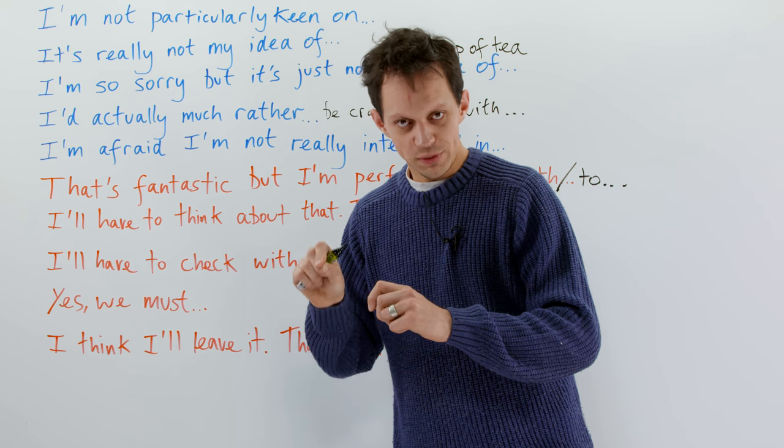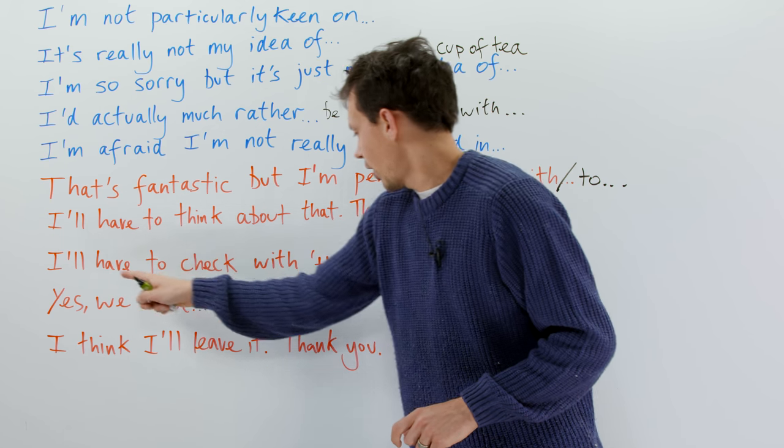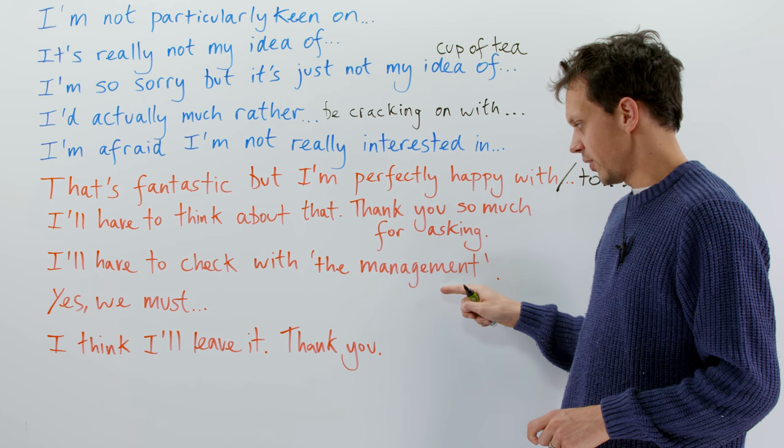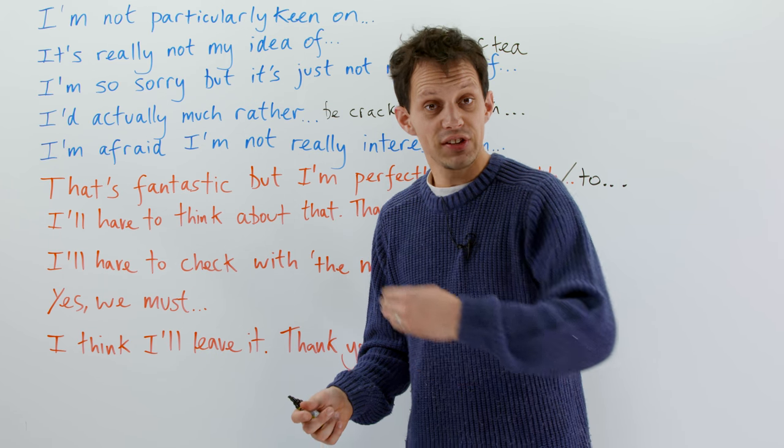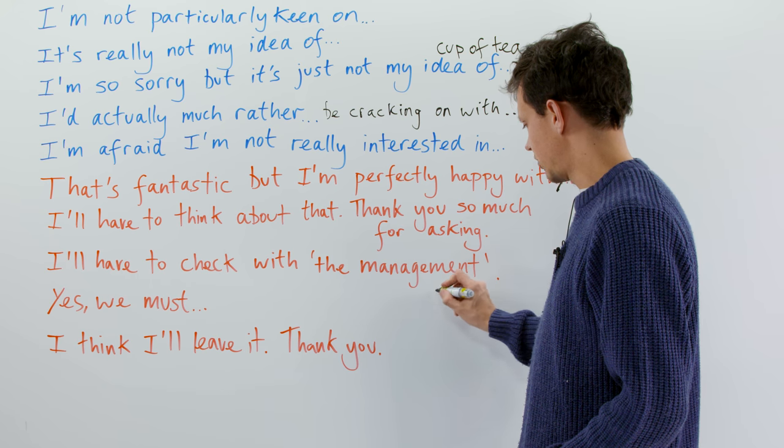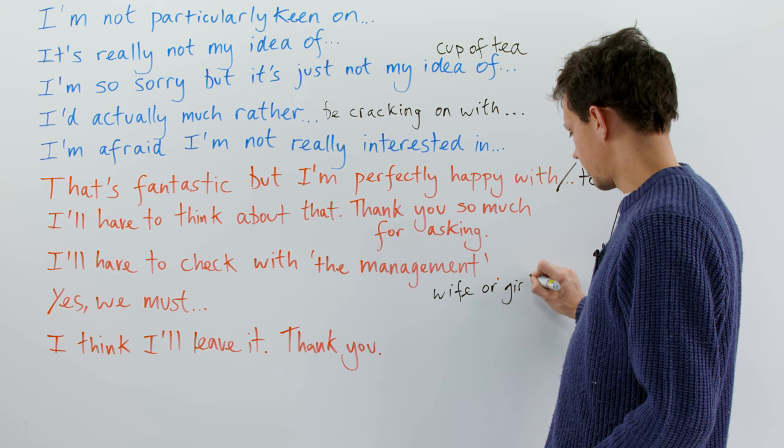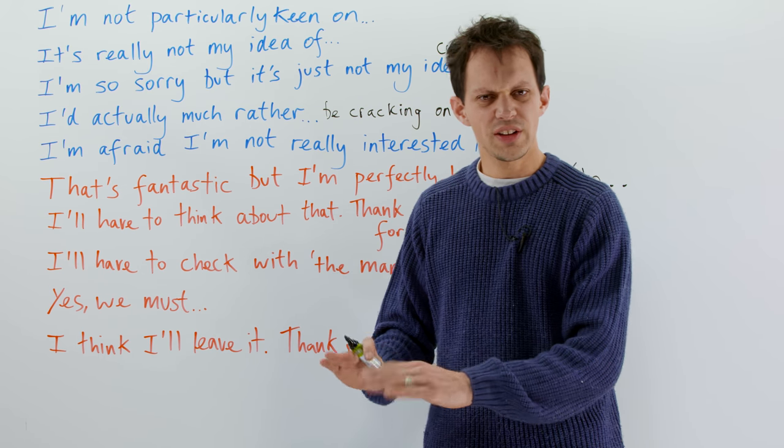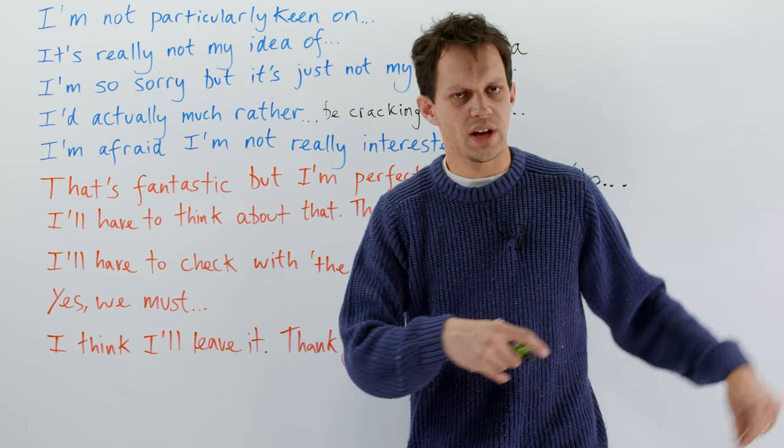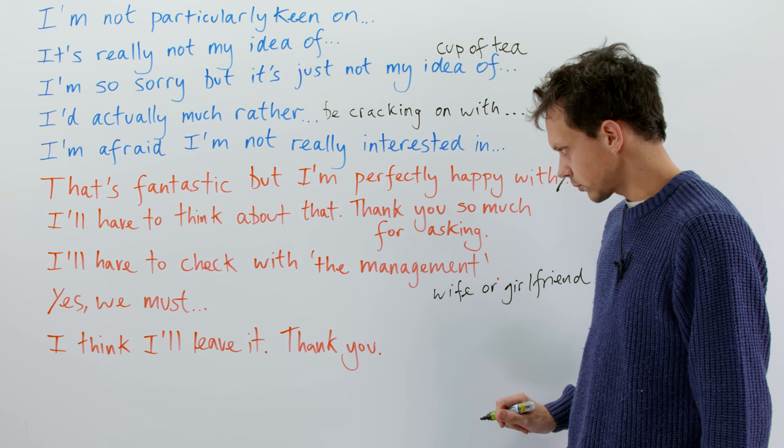Or, if you want to press pause and give yourself time to think, you could say, I'll have to check with the management. The management here is, if you're a guy, it's your partner. So, this is the wife or girlfriend. It's a way of saying, I don't really want to make a decision. I'm going to talk to her. I'll have to check with the management.